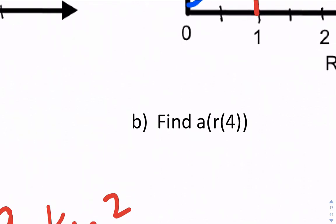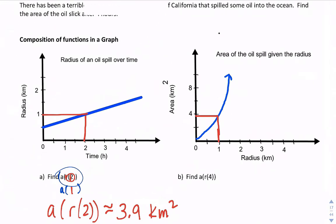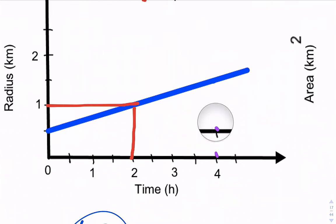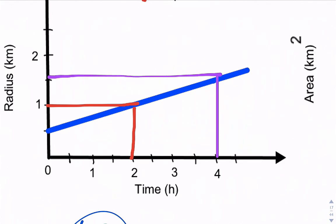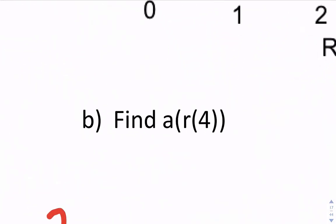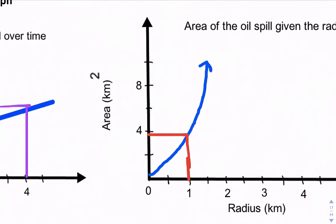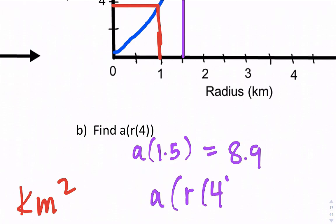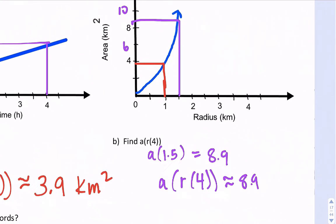The next one asks: what if the radius is 4? Find the area of the oil spill. So when the time is 4, the radius is about 1 and a half. Now let's find the area when the radius is 1.5 using our second graph — go up and over. That's almost 9; this is 10 right here, so we'll say about 8.9. The area when the time is 4 hours is about 8.9 kilometers squared.